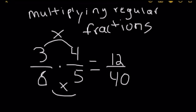But this answer is not your final answer. You have to reduce. So you have to see which numbers go into both 12 and 40. So it would be 4.